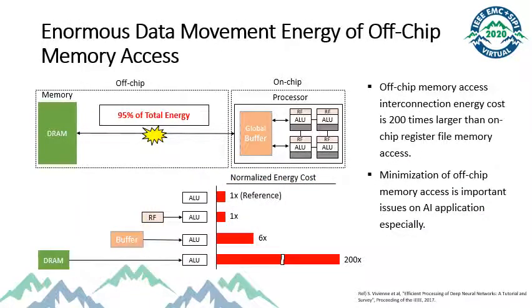We need to know how the data movement energy is serious in computing systems. Computing memory systems work hierarchically for efficient computation. Especially, the transferring data from off-chip memory to the processor consumes lots of energy. Interconnection energy cost of off-chip memory access is 200 times larger than on-chip register file memory access or logic unit operation. Therefore, minimization of off-chip memory access is important to save computing energy, especially in AI operations.